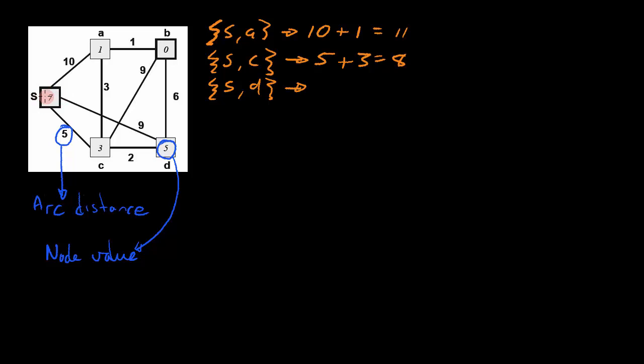From node S to node D we have an arc value of 9 and a base value or a node value of 5 for a total distance value of 14. So this is the first step.